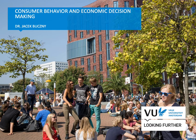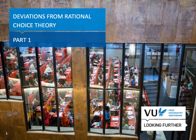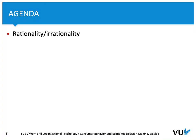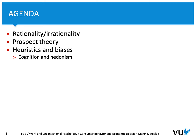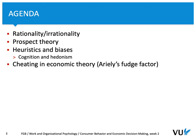Welcome again. In week two, this meeting we are going to focus on the topic 'Deviations from Rational Choice Theory.' This is part one, where we're going to talk about rationality and irrationality in the context of prospect theory. Later we'll focus on heuristics and biases, and finally in the fourth part we'll focus on cheating in economic theory and what Dan Ariely's fudge factor is about.